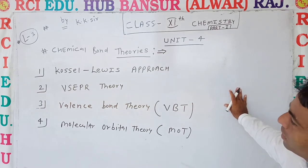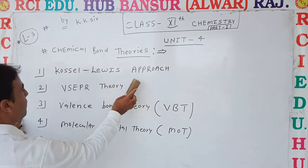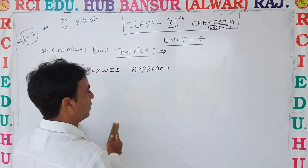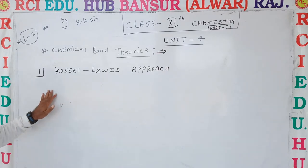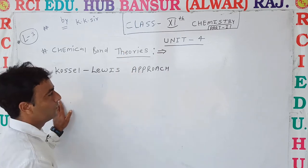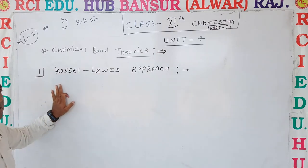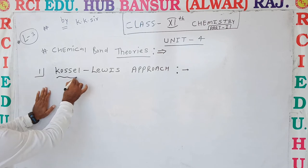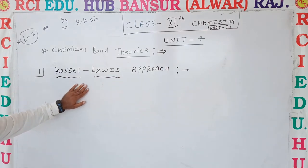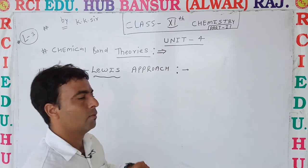First is the Kossel-Lewis approach, and today we start with it. There will be 2 scientists involved — one is Kossel, and the second is Lewis. This marks the starting point of the study of bonds, first given by Kossel and Lewis, which tells us about bond formation.